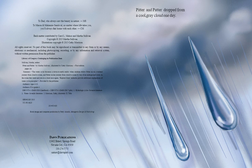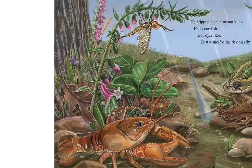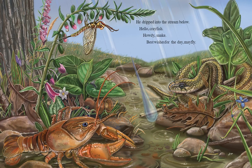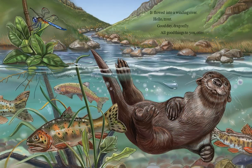Pitter and Patter dropped from a cool gray cloud one day. Pitter landed on a leaf on an oak tree. 'Hello squirrel! Good morning blue jay! Rise and shine caterpillar!' He dripped into the stream below. 'Hello crayfish! Howdy snake! Best wishes for the day mayfly!' The stream carried Pitter down into the valley. 'Hello fox! Greetings dear! A pleasure to see you again hawk!'